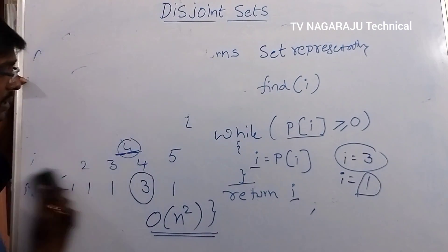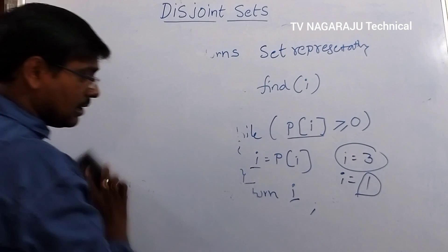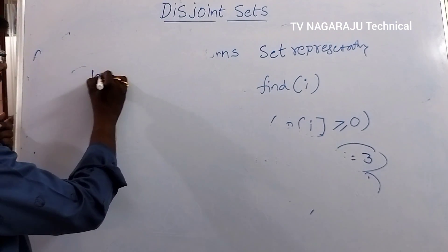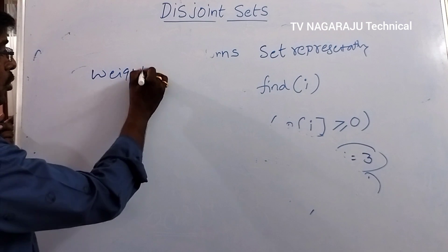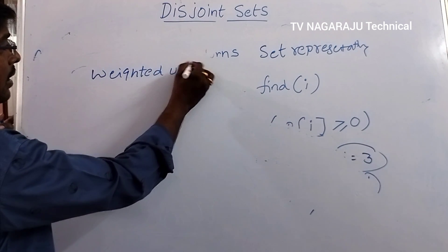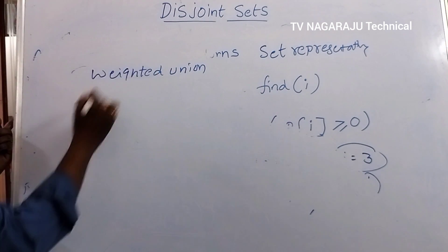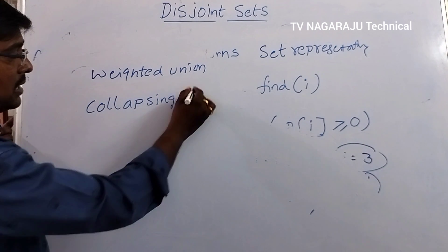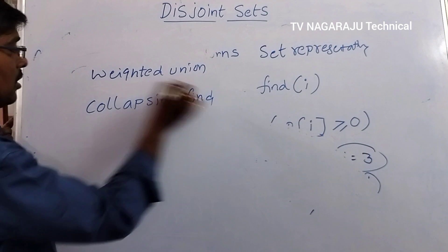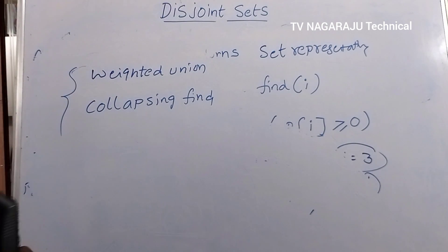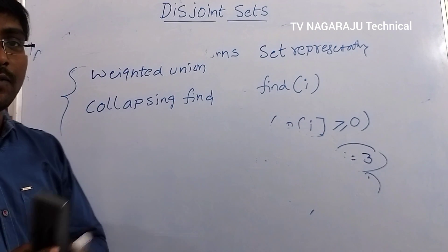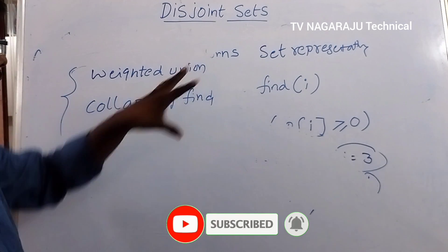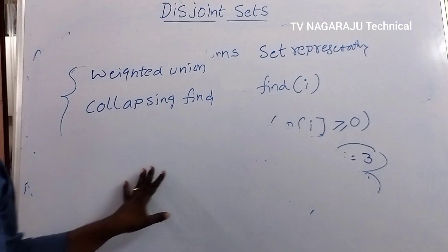We have discussed simple union and simple find operations. To increase the performance or efficiency of these operations, we move into weighted union and collapsing find. These two are the techniques used to increase the efficiency of the union and find operations. In the next session we will discuss weighted union and collapsing find. Thank you.